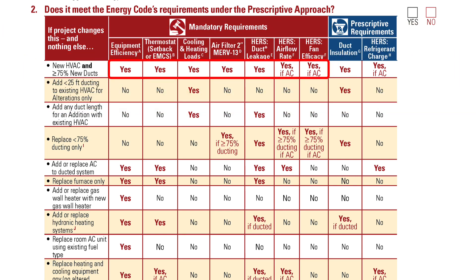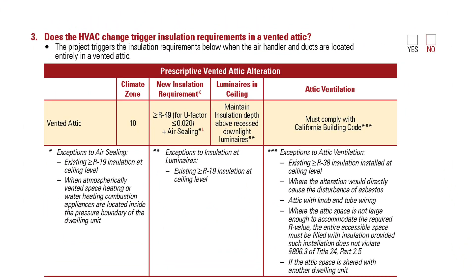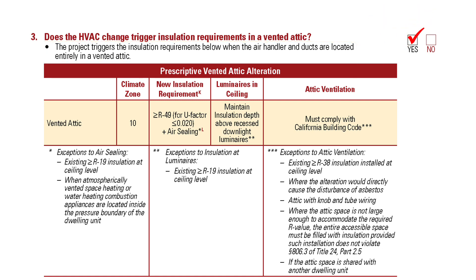When applicable, mandatory requirements can also appear in the checklist essentials page. In this case of a complete HVAC replacement, mandatory measures do apply. The next question is: does the HVAC change trigger insulation requirements in a vented attic? In this case, you determine the project is located entirely in a vented attic, so it does trigger insulation requirements.